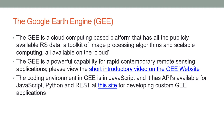Please view the short introductory video on the Google Earth Engine website linked here. The coding environment in Google Earth Engine is in JavaScript, and it also has APIs — Application Programming Interfaces — available for JavaScript, Python, and REST. This site is hyperlinked to the developer's website for developing custom Google Earth Engine applications, for all the programmers in the class who would have an interest in this.